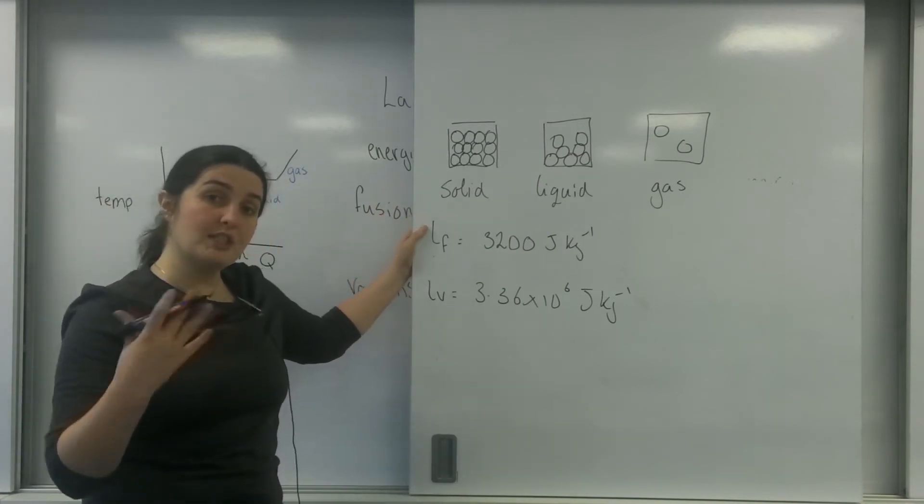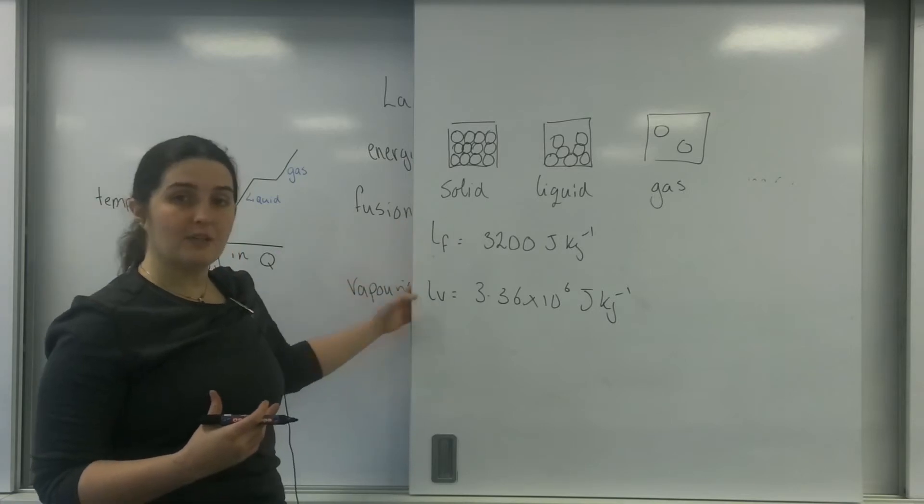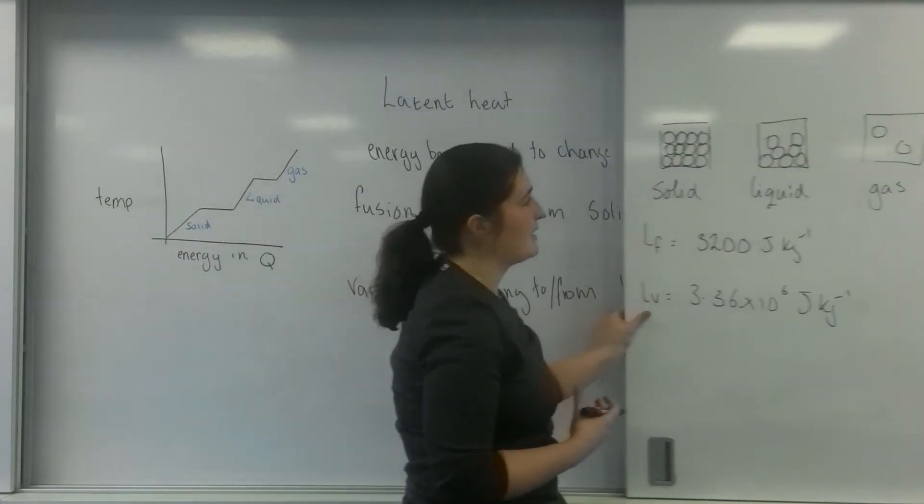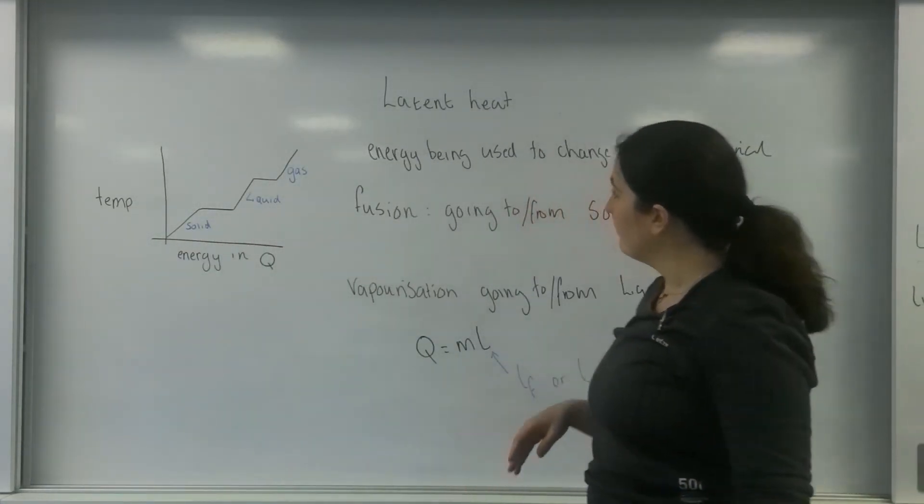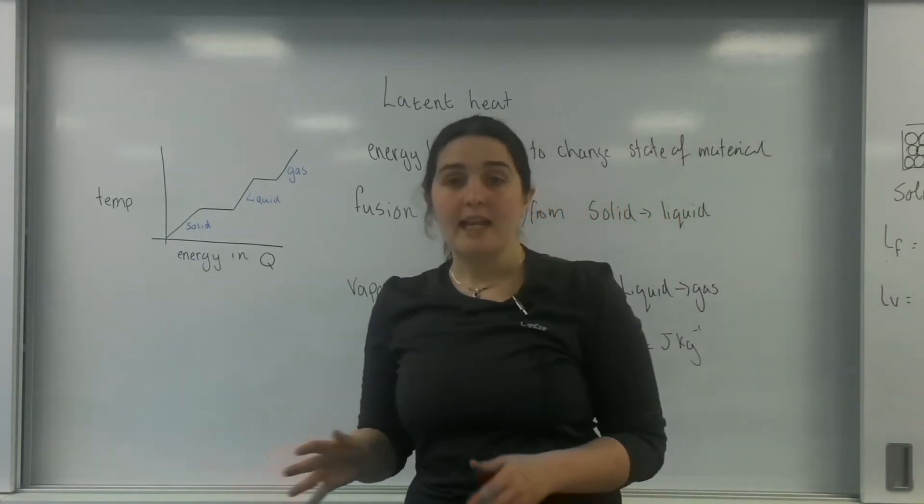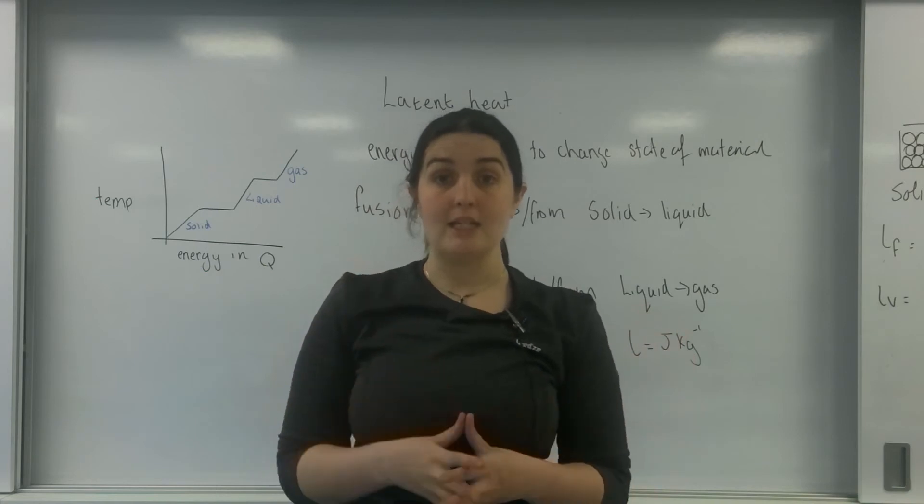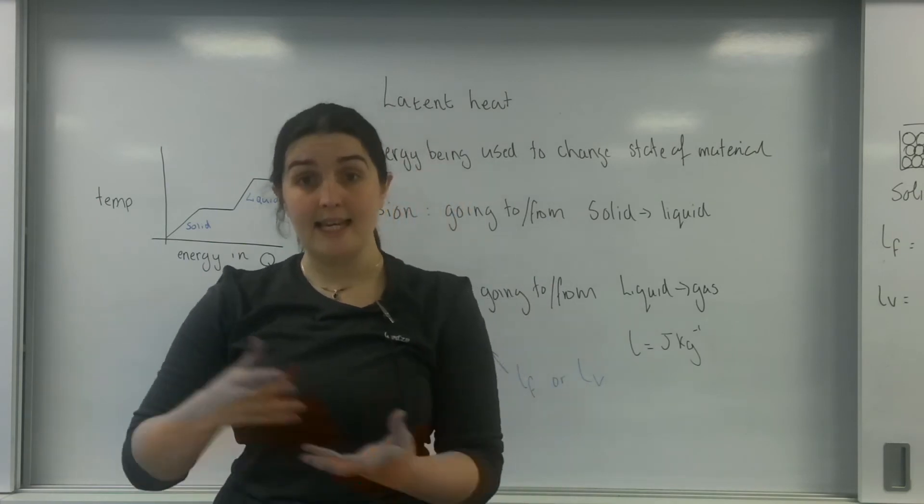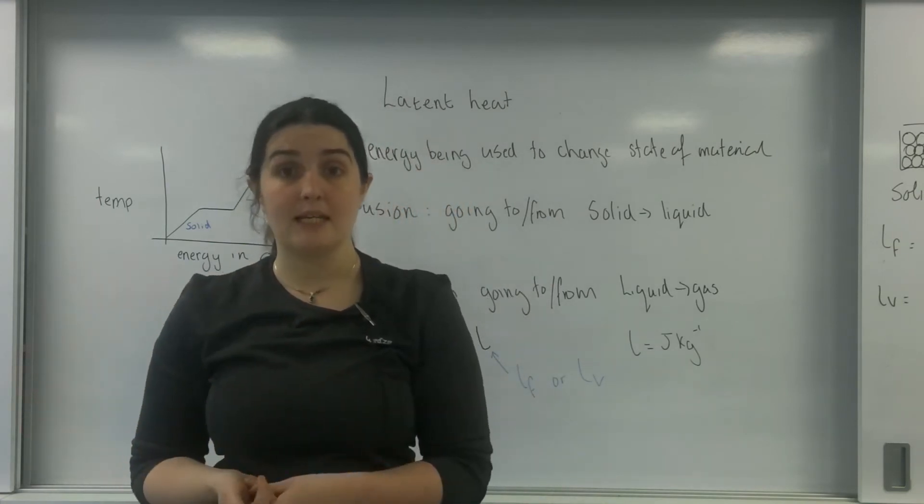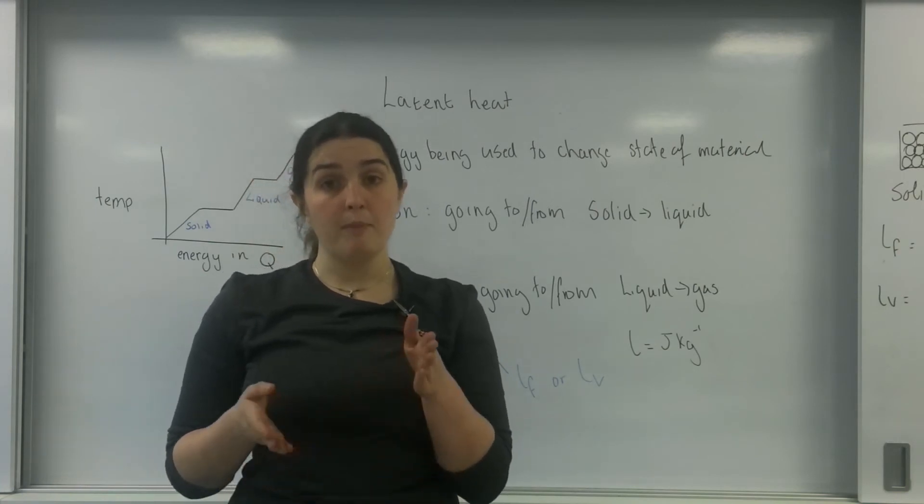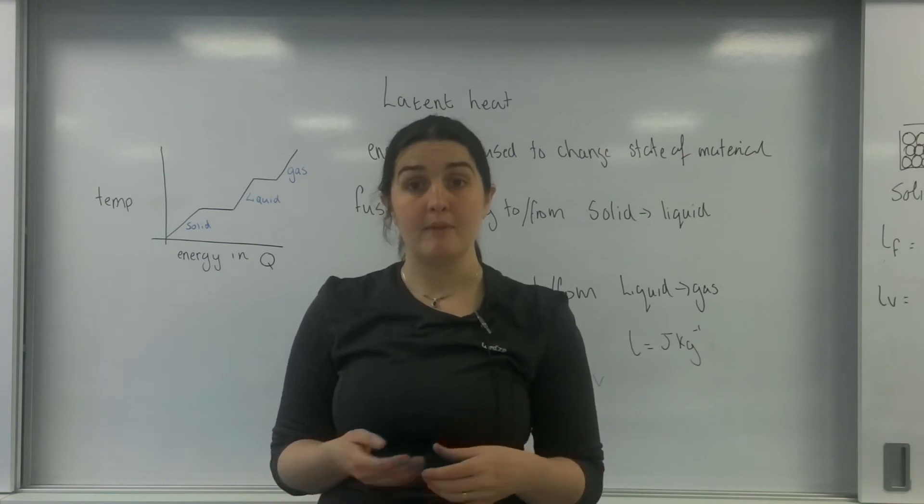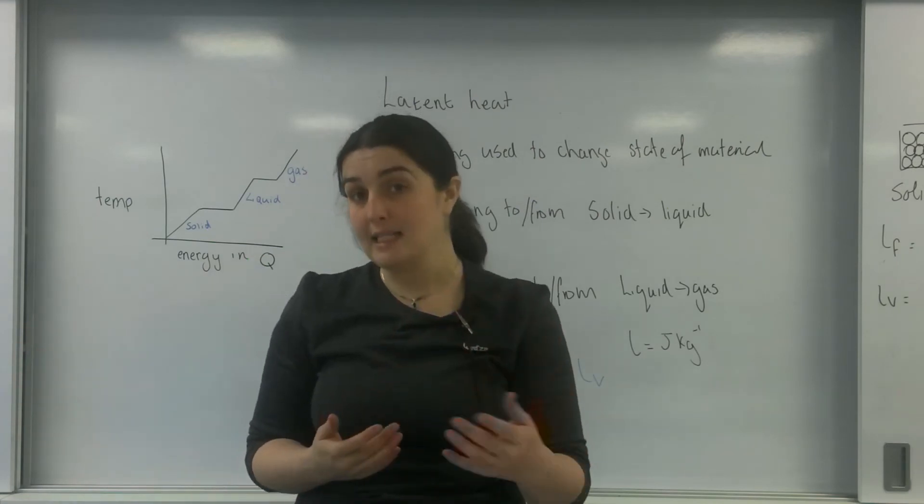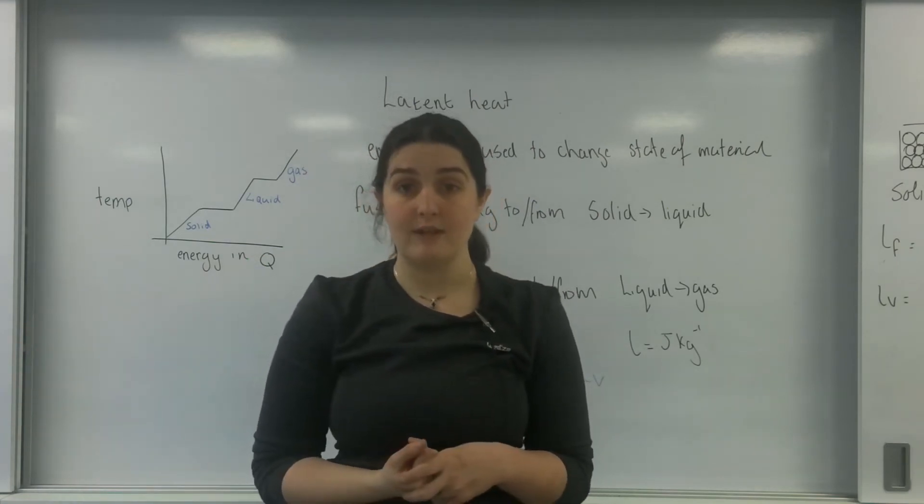So please be aware that when you're changing state like this, that you may have different values for the latent heat of fusion and the latent heat of vaporization. They may give you both in your experiment itself. Now, in a question, you may be going through many stages of going from ice to melting to liquid to heating that up to then evaporating and then going into steam. And you might be going between latent heat and specific heat capacity. In my next video, I'm going to go through a question that will be going through the multiple stages of using latent heat of fusion or using specific heat capacity.